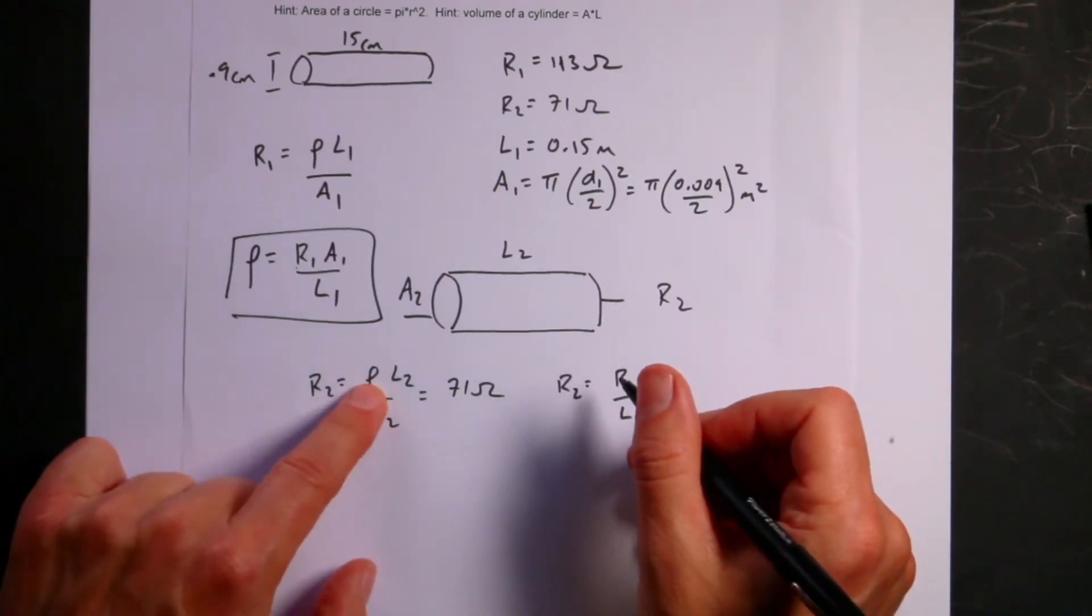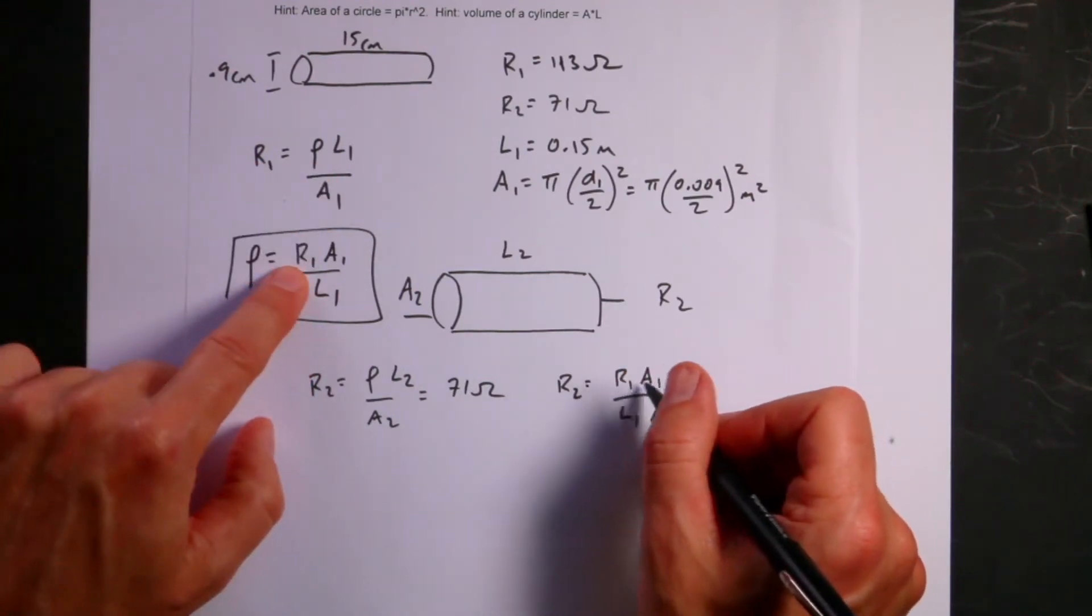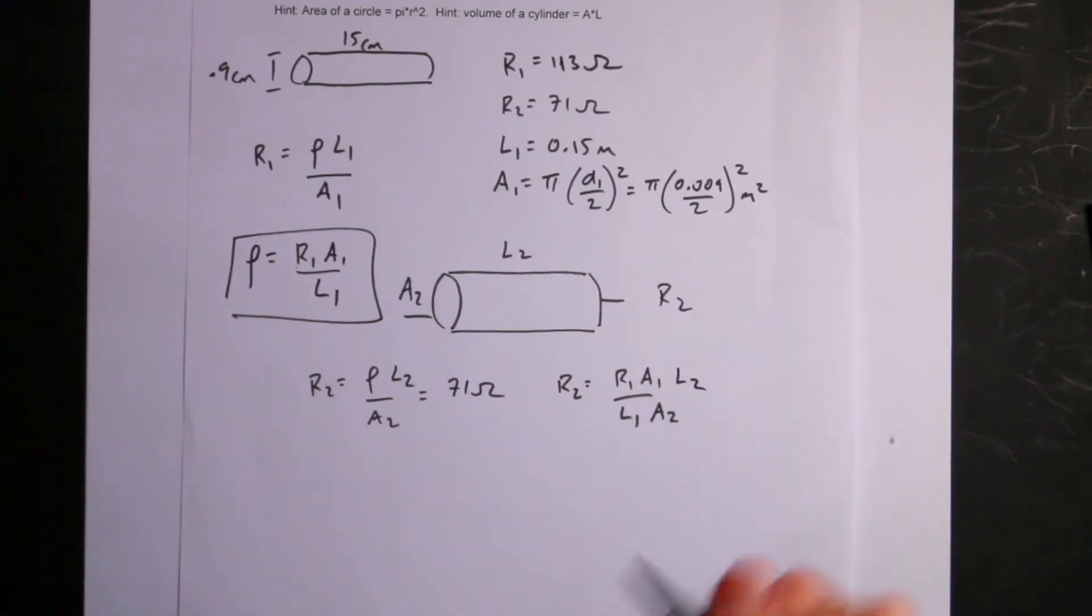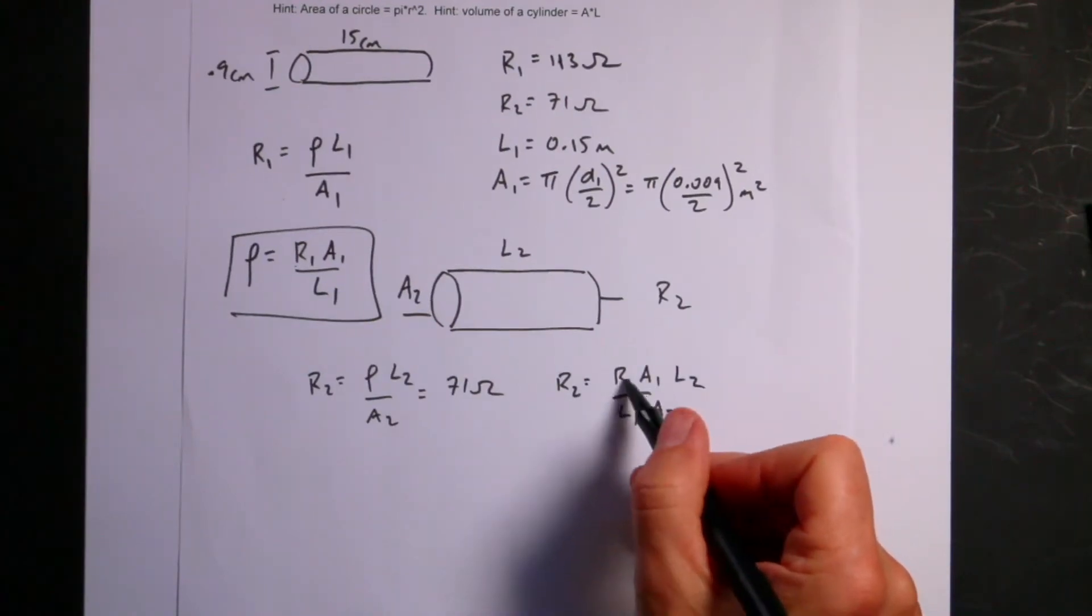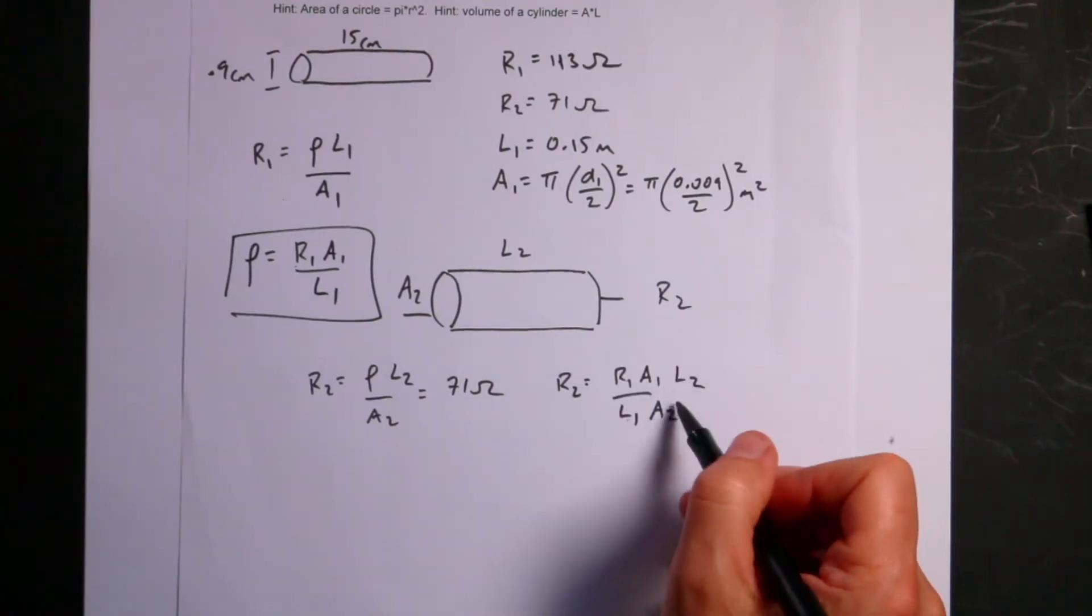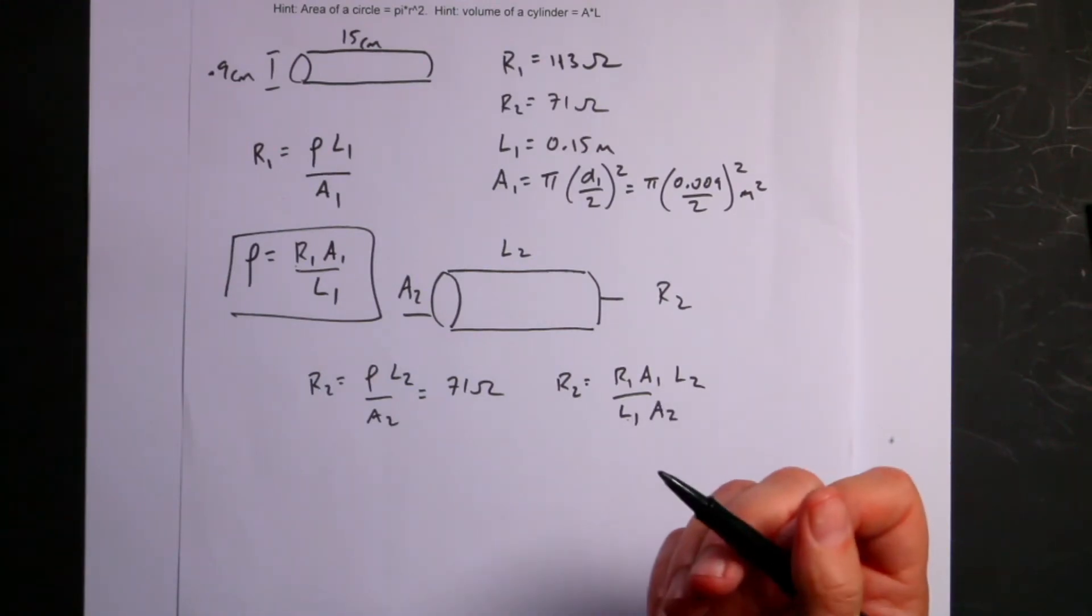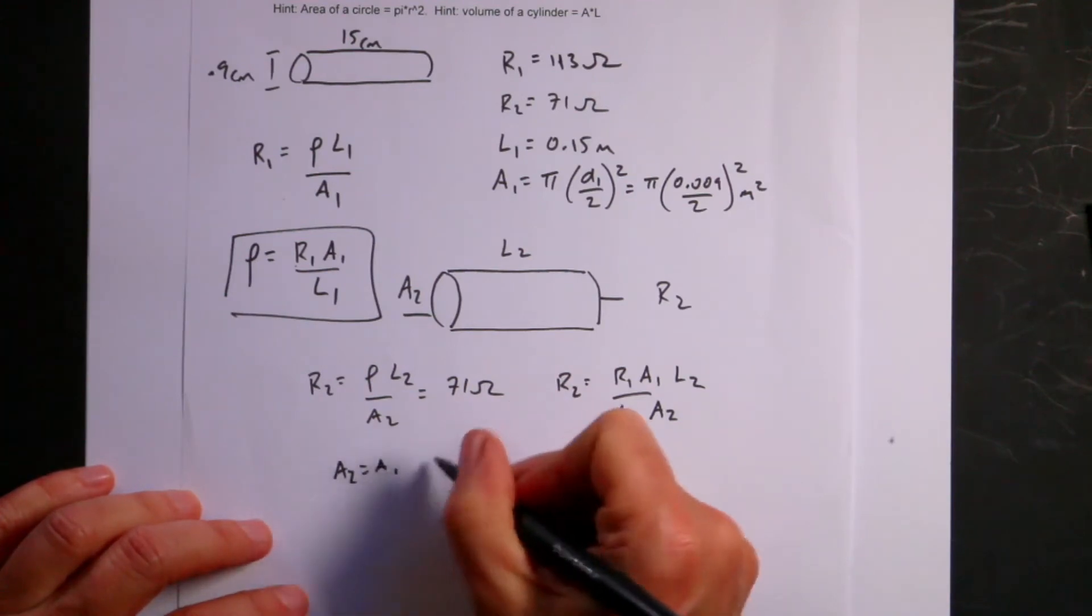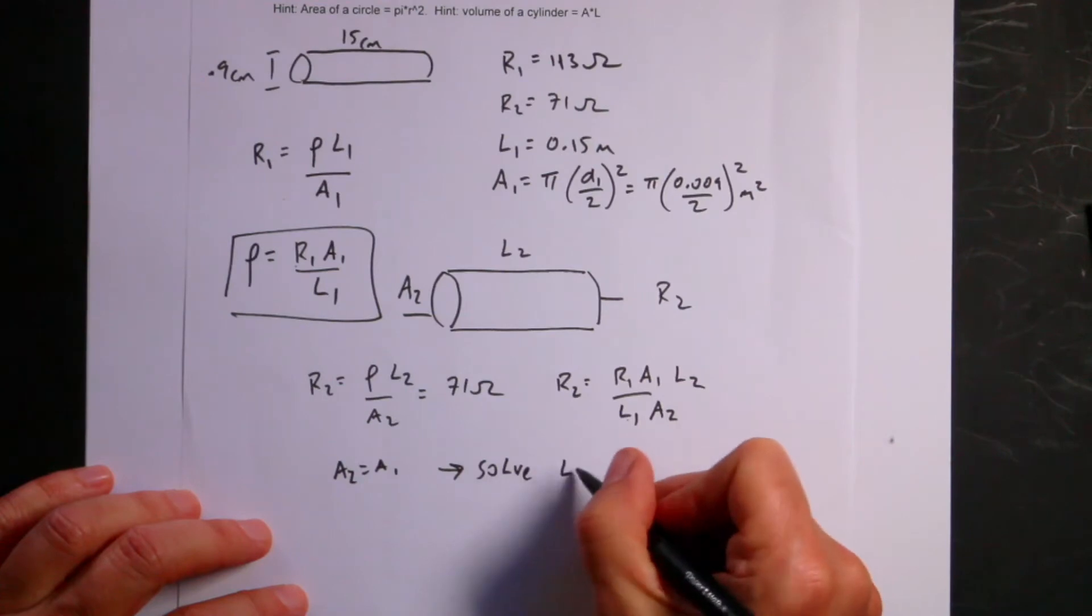I can say R2 equals the resistivity which is R1 A1 over L1 times L2 divided by A2. Then I need to multiply it by L2. So I know A1, I know L1, I know R1. I don't know L2 or A2. Now, here's where you could just pick. I could say A2 equals A1, solve for L2. I could do that. In that case, these would cancel and I'd really just get a ratio of lengths.